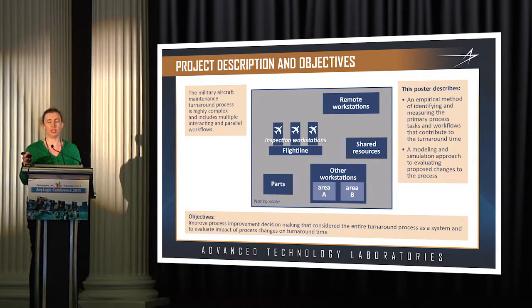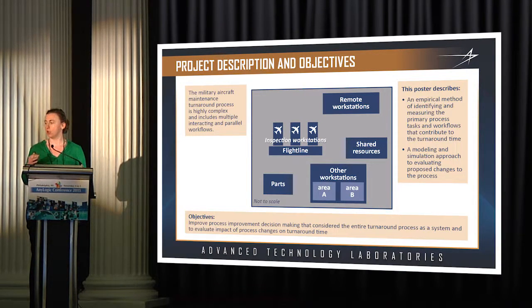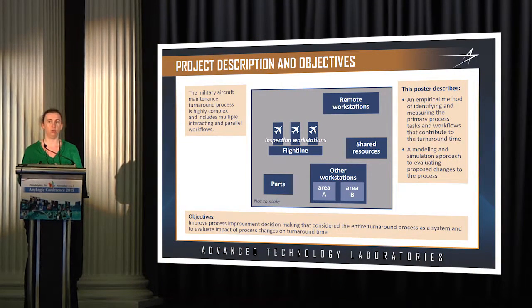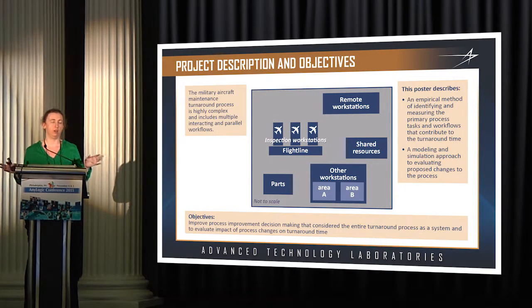This project had two goals: to understand how to capture the turnaround process, and then to model it — with the hope of improving it, to understand where there are bottlenecks in the human and machine teaming, thinking about it like a conveyor belt methodology, where there are bottlenecks with who's holding up the line.